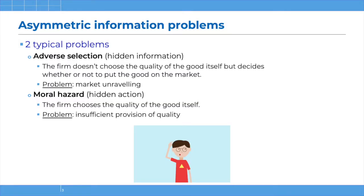There are two typical asymmetric information problems. One is called adverse selection — it's a problem of hidden information, where the seller doesn't choose the quality of the good itself but decides whether or not to put the good on the market. The problem is that the market may unravel. The second problem is called moral hazard, a problem of hidden action, where the firm chooses the quality of the good itself. The main problem here is an insufficient provision of quality.